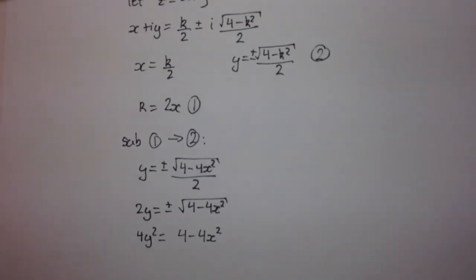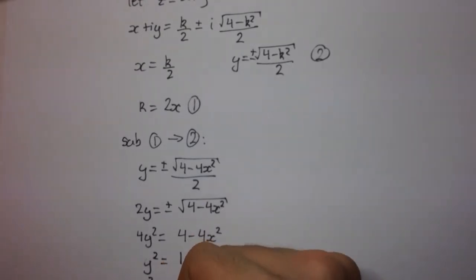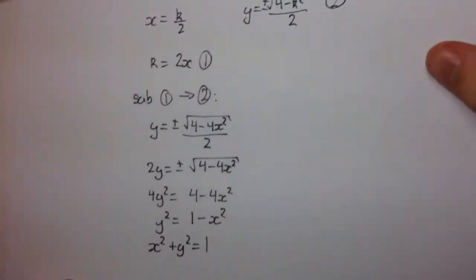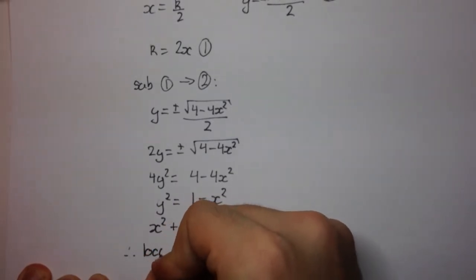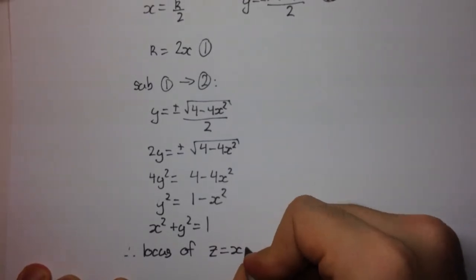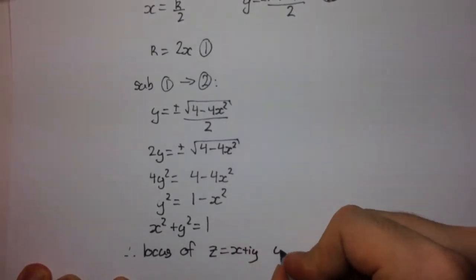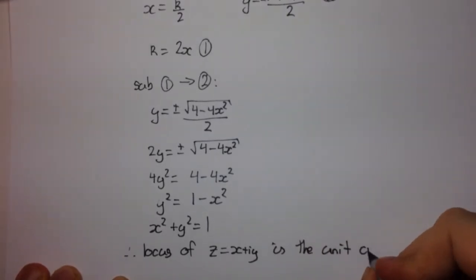Now, you can see we can cancel off the 4. We're going to get y squared is 1 minus x squared. We rearrange and we get x squared plus y squared equals 1. x squared plus y squared equals 1. And so, therefore, the locus of z, which is x plus iy, is the unit circle x squared plus y squared equals 1.